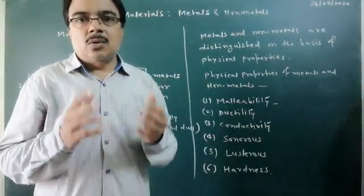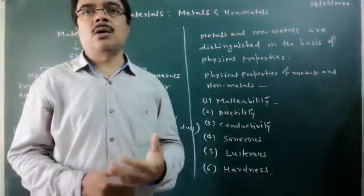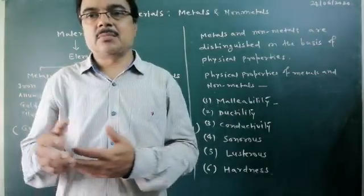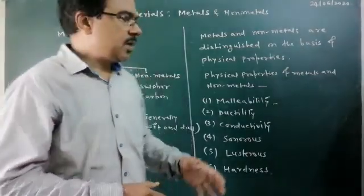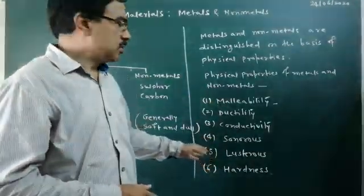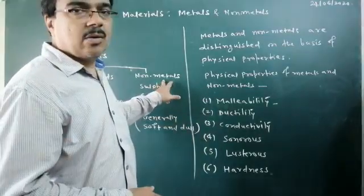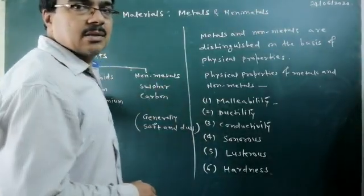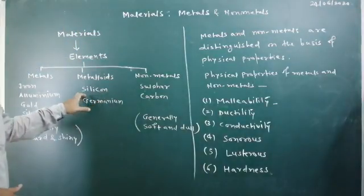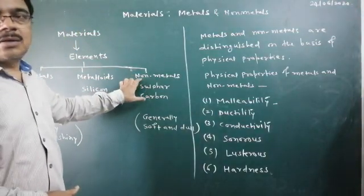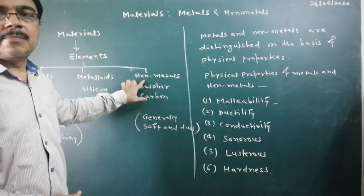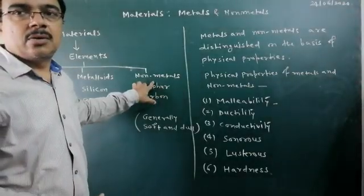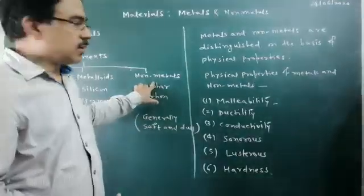Because we have to gather many properties to determine whether something is a metal or non-metal. There may be exceptions; some of the hardest materials may be non-metals. We're saying metals are hard materials, but diamond, which is a form of carbon, is the hardest material known on earth.